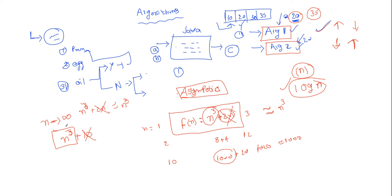So in asymptotic analysis, we ignore small values like 2n compared to n³, and we also ignore constant values for larger values of n. Now you may ask: is asymptotic analysis a very good approach for finding performance of every algorithm? In my view it's not perfectly accurate for all inputs, because ignoring 2n means the result is approximate, not exact.